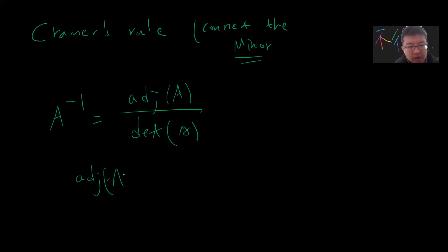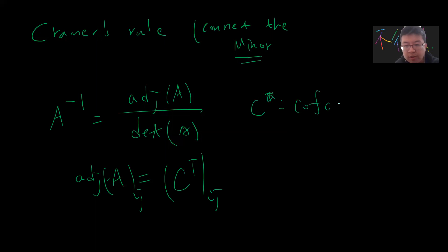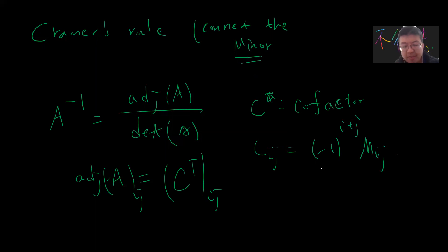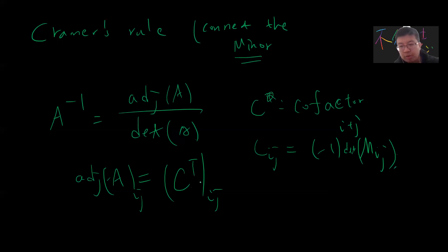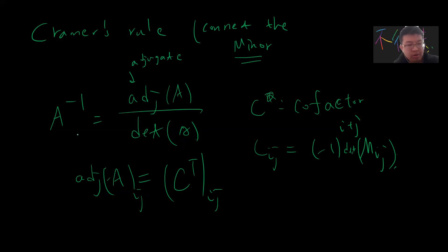The adjugate of A is defined so that its ij-entry is C_{ji}, where C is called a cofactor. The cofactor C_{ij} is defined by deleting the i-th row and j-th column — giving an (i+j) minor — and then computing its determinant. Then you transpose that to get the adjugate, and dividing by det(A) gives A inverse. This is also a linear algebra result.